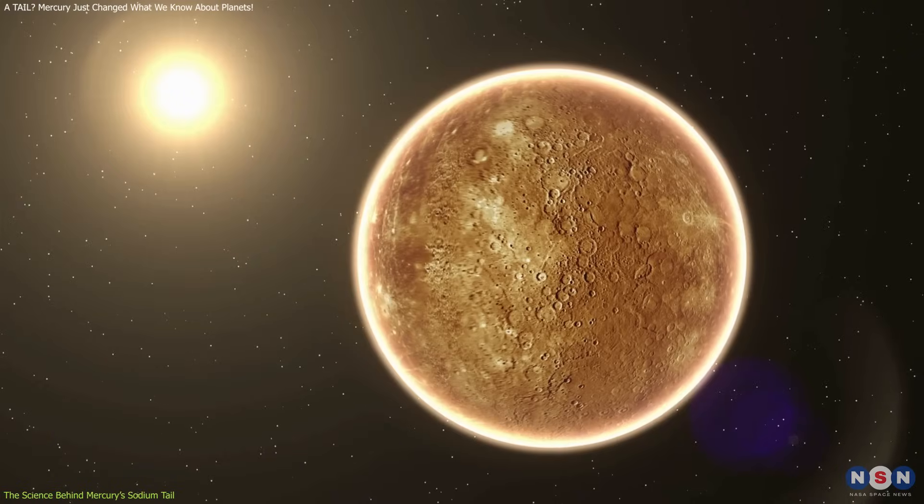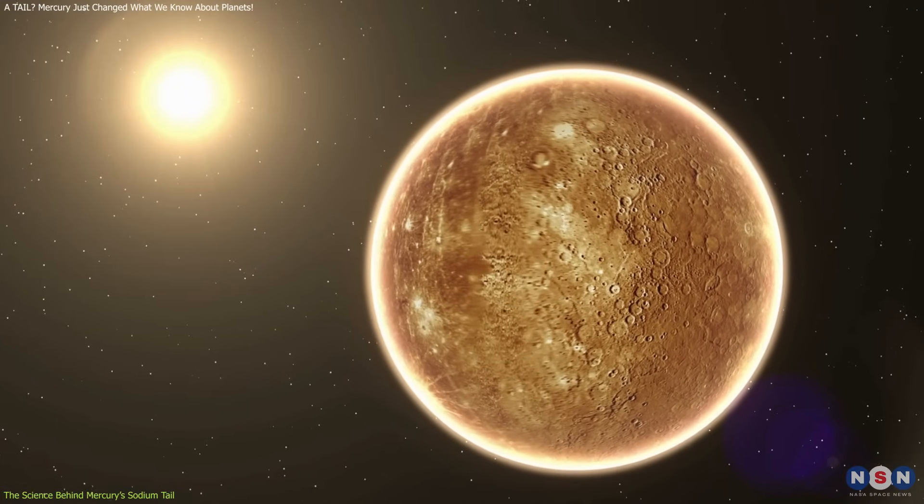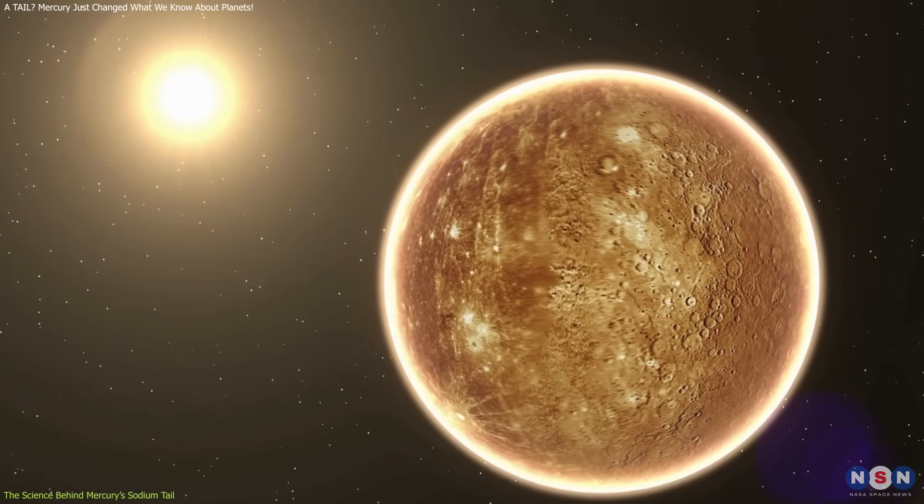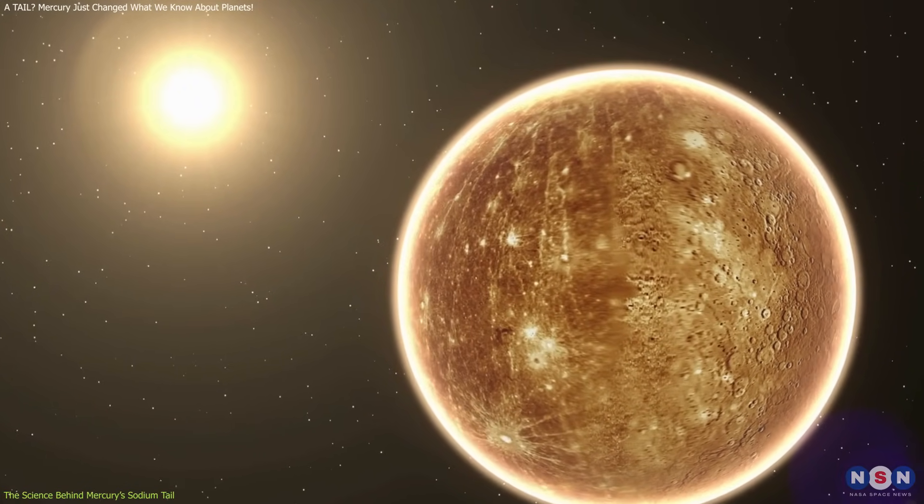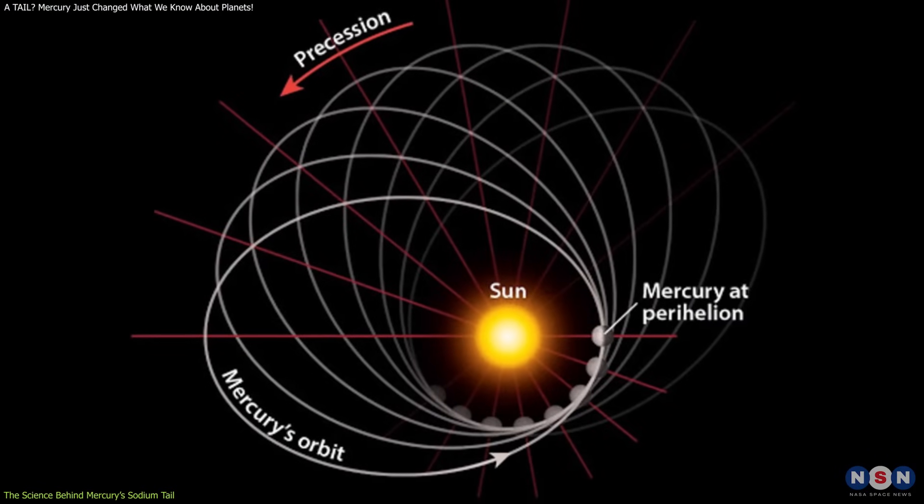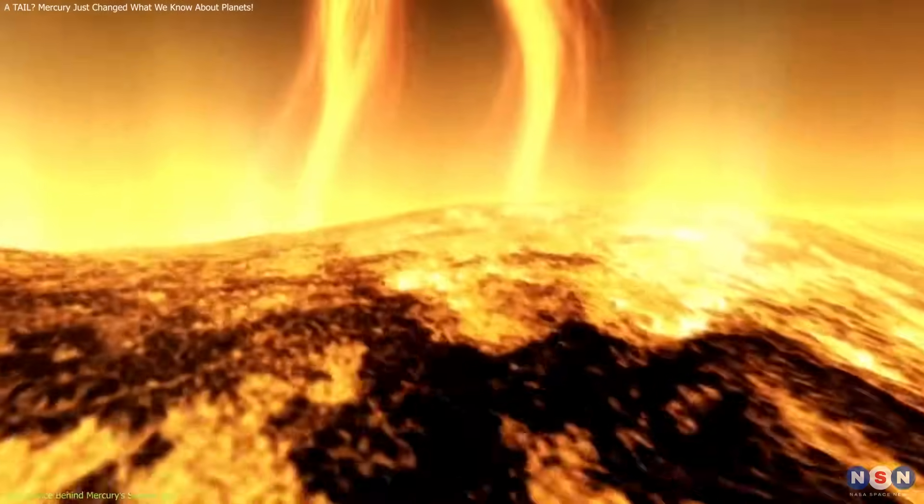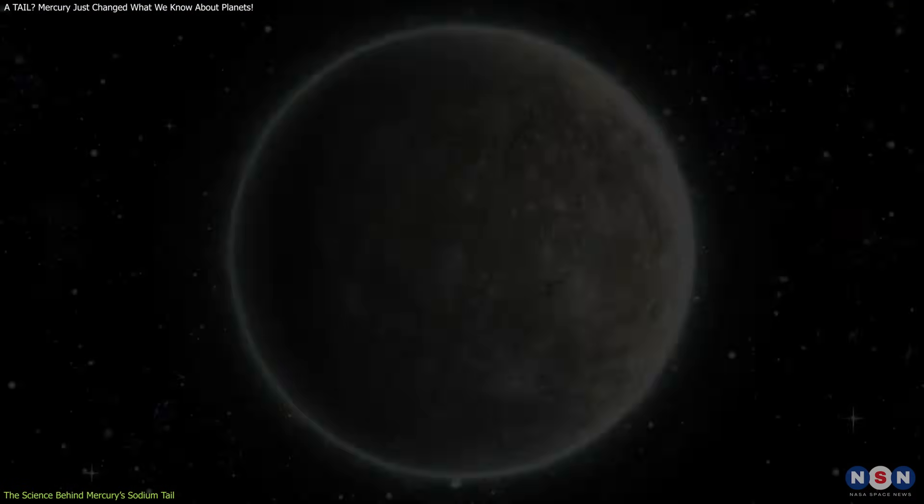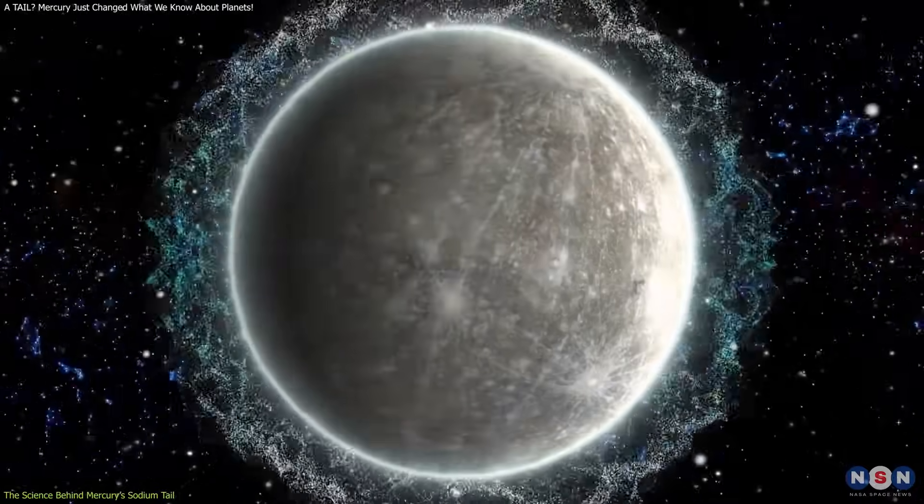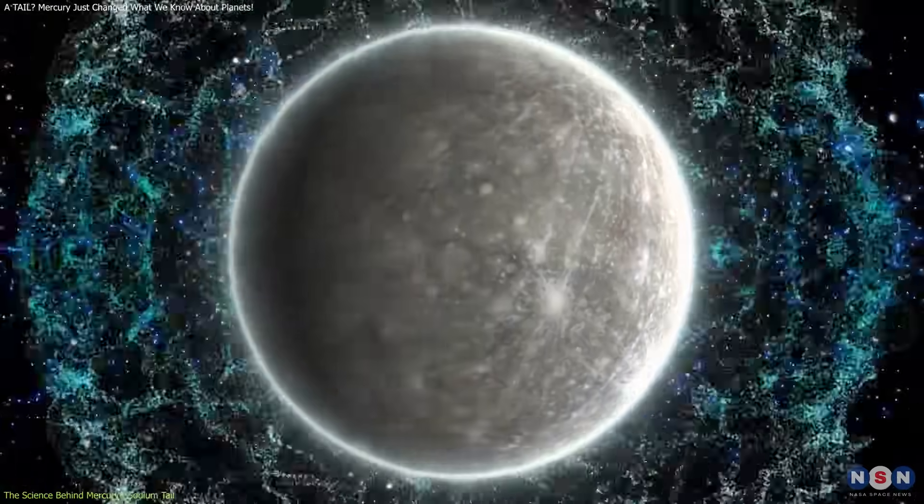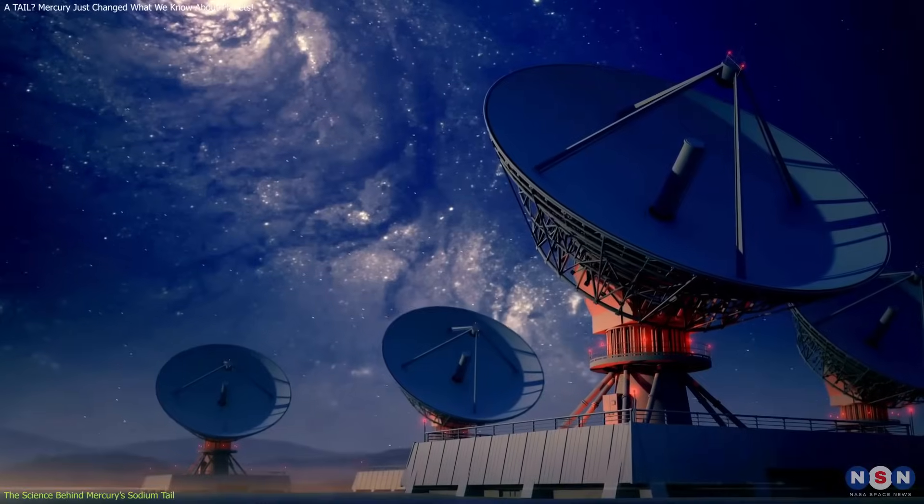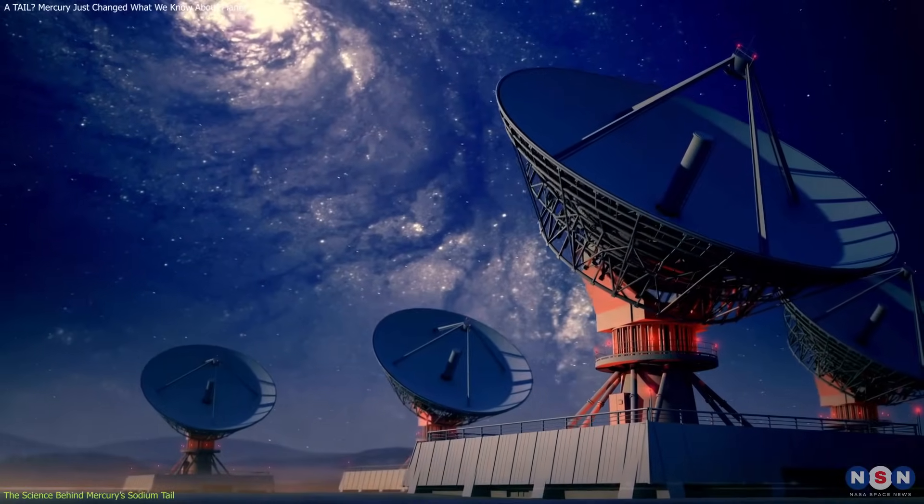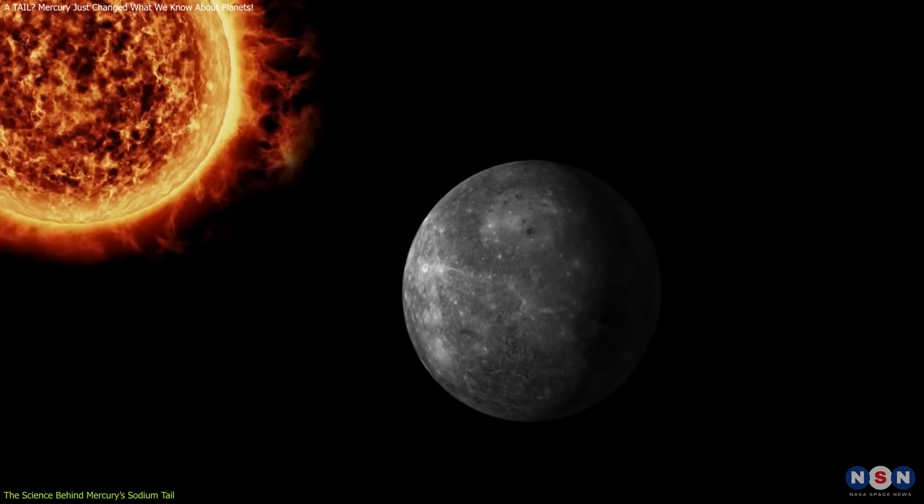The tail's brightness and length vary depending on Mercury's position in its orbit. Observations show it glows brightest about 16 days before or after the planet reaches its closest point to the Sun, known as perihelion. During this time, the Sun's activity increases and Mercury receives more radiation and heat, unleashing a storm of particles from the surface and enhancing the sodium tail. Telescopes on Earth have captured remarkable images of this phenomenon, especially during these peak periods.